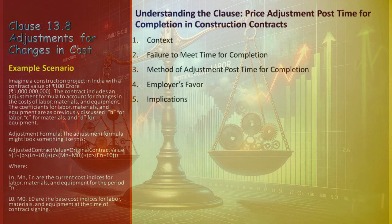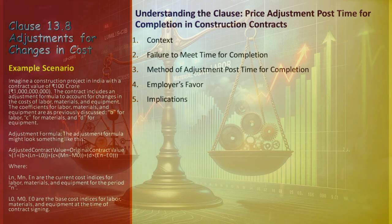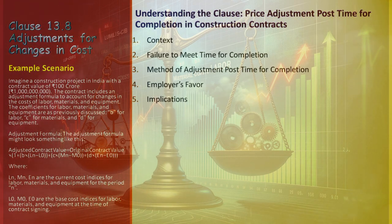In a real-world scenario: an Indian construction project scheduled for completion by December 31, 2024, is delayed. The employer compares adjustments based on indices from November 12, 2024, against those at actual completion in February 2025. The employer then selects the adjustment method resulting in a lower contract price, aligning with the clause's stipulation to favor the employer's financial position.